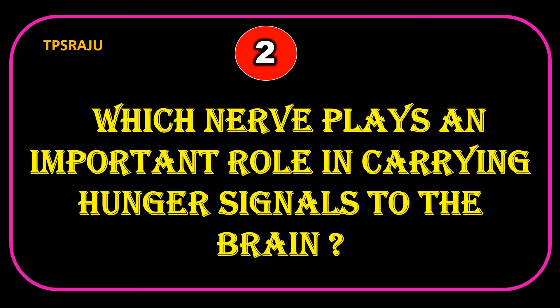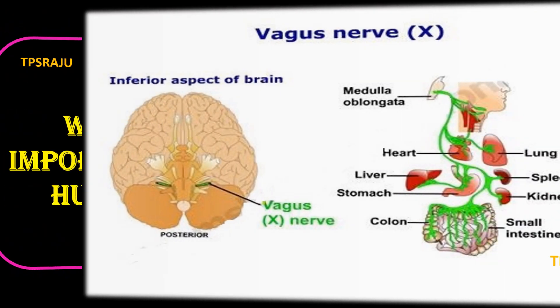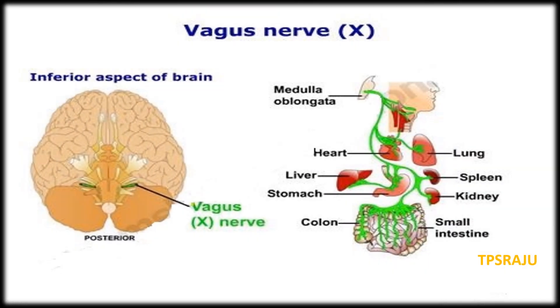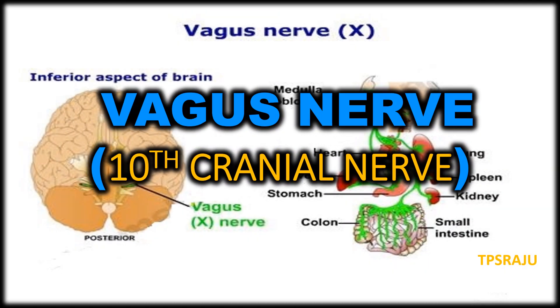Which nerve plays an important role in carrying hunger signals to the brain? The vagus nerve, also known as the 10th cranial nerve.